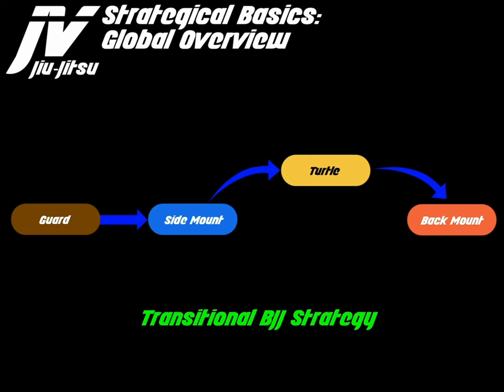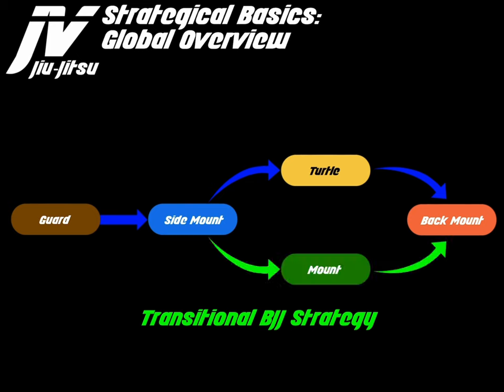Traditional BJJ strategy is a little bit different. You usually go from sidemount and transition to mount. And from mount, sometimes a person will turn to backmount.